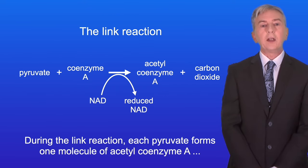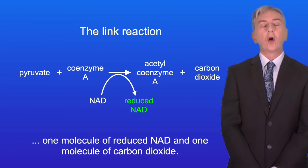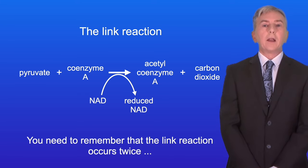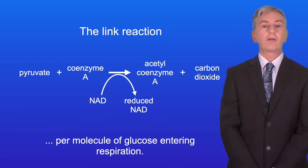During the link reaction each pyruvate forms one molecule of acetyl coenzyme A, one molecule of reduced NAD, and one molecule of carbon dioxide. And you need to remember that the link reaction occurs twice per molecule of glucose entering respiration.